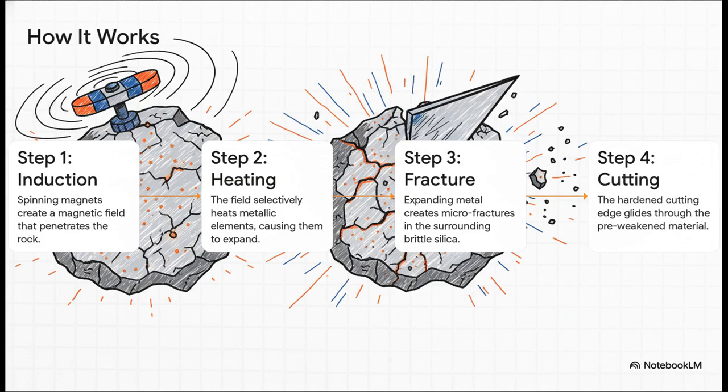Here's how this attack works. First, as the tool spins, those magnets create a rapidly changing magnetic field that penetrates right into the rock. This magnetic field only heats up the little metallic particles, leaving the silica completely cold. So those little metal bits get hot and expand, creating that internal thermal shock, and that shatters the brittle silica all around them. The rock is basically pre-weakened, shattered from the inside out. And then the physical cutting edge of the tool comes along and just sweeps away the broken material. Almost no resistance, no friction.